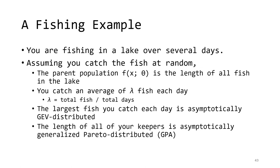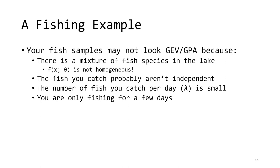Let's look at a non-hydrology example of how the two extreme value theorems relate. Imagine you're out on a lake fishing for several days. Assume that the fish you catch are a random sample of all the fish in that lake. There's a parent population, f of x, that describes the distribution of the length of all fish in the lake. Over those several days, you catch some number of fish, resulting in an average of lambda fish per day. If you track the length of the largest fish you catch each day, the distribution of those lengths is asymptotically GEV distributed. If the Department of Natural Resources says you can only keep fish over a certain length, the keeper lengths will be asymptotically generalized Pareto distributed.